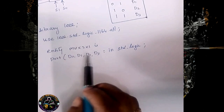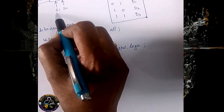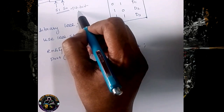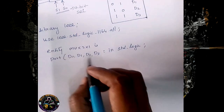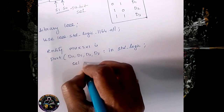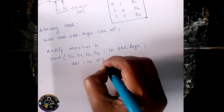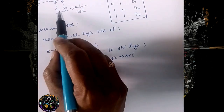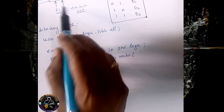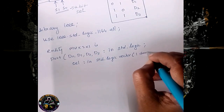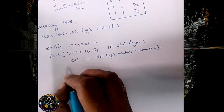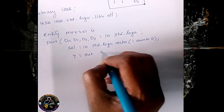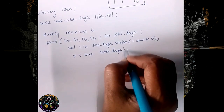Then S1 and S0 are the selection lines. We can name these 2 selection lines as a single 2-bit variable called 'sel'. So we declare it as 'in' with data type std_logic_vector. Within the bracket we write the bit range: 1 downto 0, since we have 2 bits. Next, we declare our output Y as 'out' with data type standard_logic.